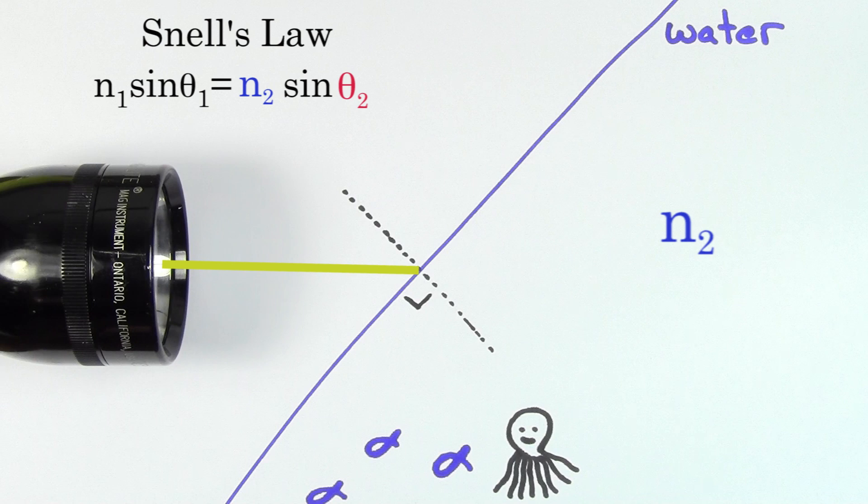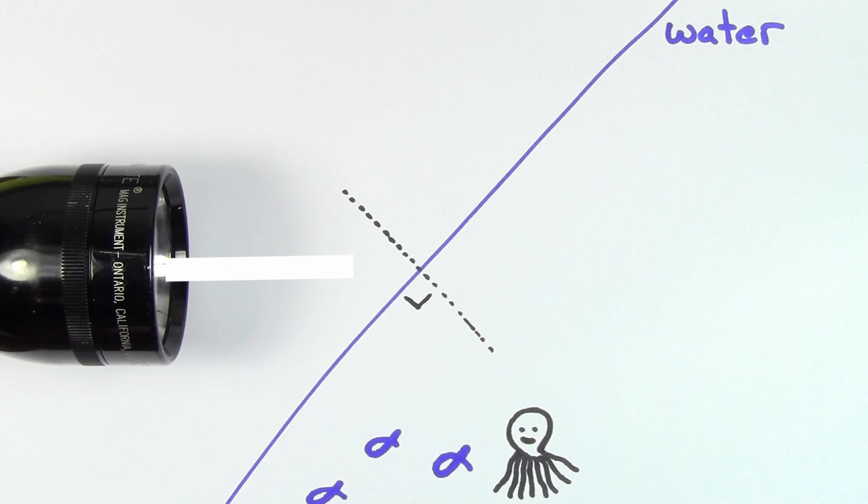Since if the index of refraction is larger, the angle of the refracted light must be smaller. And in order to have a smaller angle from the normal line, the light ray has to bend more from its initial direction.